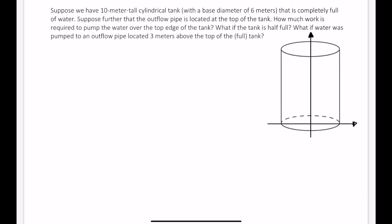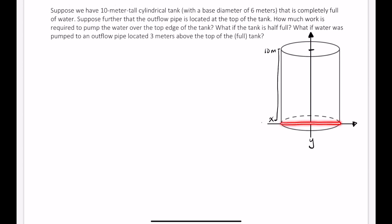So I have an x-axis and a y-axis. The positive y-direction is going upwards, so the top of the tank is located at y equals 10 meters. Now we're told that the diameter is 6 meters at the base — since this is a cylinder, that's also 6 meters at the top, so the radius is 3 meters. The outflow pipe is located at the top of the tank, meaning the water comes out right at the top — imagine the pump is right there where the water comes out.